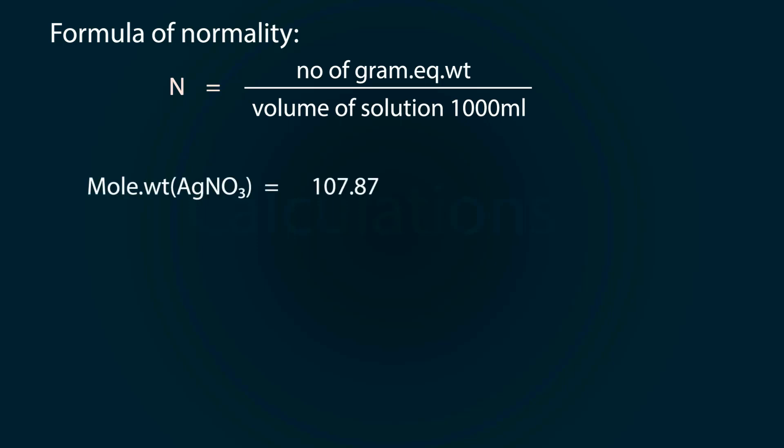The molecular weight of silver nitrate equals 107.87 (Ag) + 14 (N) + 16×3 (O₃), so we get molecular weight as 169.87 grams per mole.